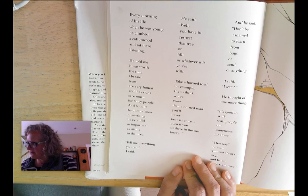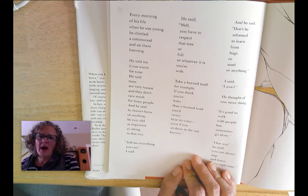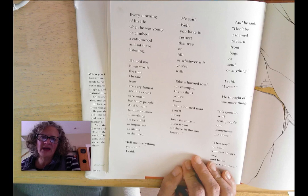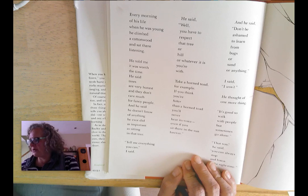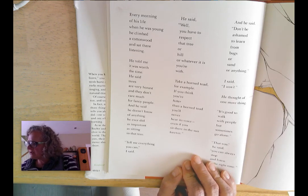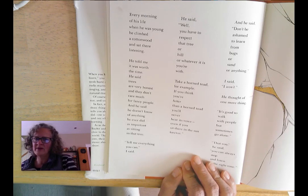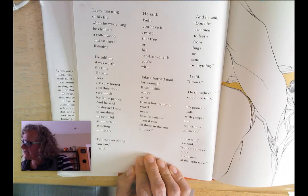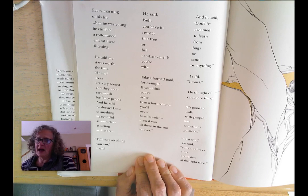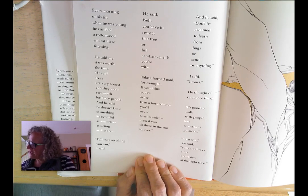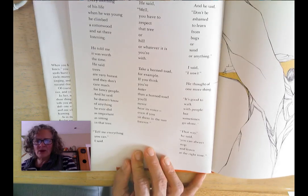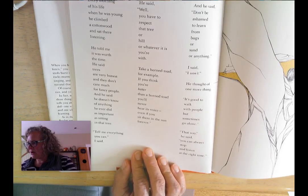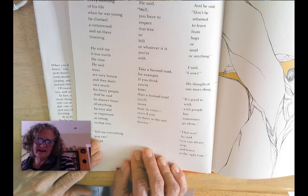Tell me everything you can, I said. He said, you have to respect that tree, or hill, or whatever it is that you're with. Take a horned toad, for example — if you think you're better than a horned toad, you'll never hear its voice, even if you sit there in the sun forever. Don't be ashamed to learn from bugs, or sand, or anything. He thought of one more thing: it's good to walk with people, but sometimes go alone. That way, you can always stop and listen at the right time.